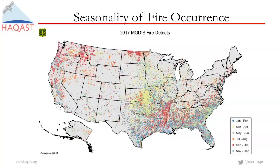I want to start with a picture of fire activity across the entire US. We live in a world where fire is a natural part of many of our ecosystems, and this figure of satellite data showing the MODIS 2017 fire detections really helps tell part of that story. It's not just about the big wildfires that make the news — there's fire all across the landscape. This figure shows the seasonality of fire occurrence across the nation.